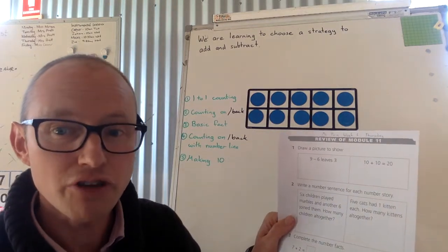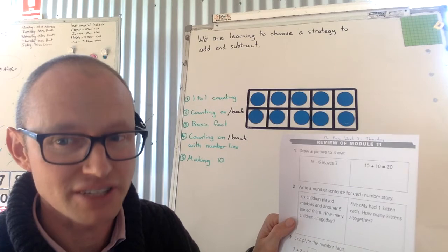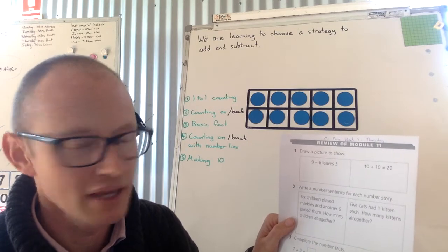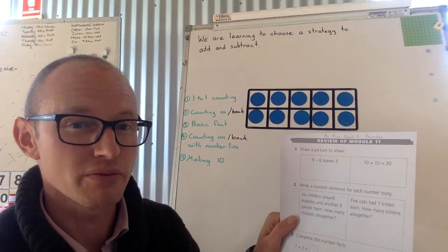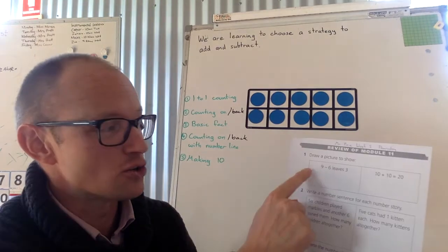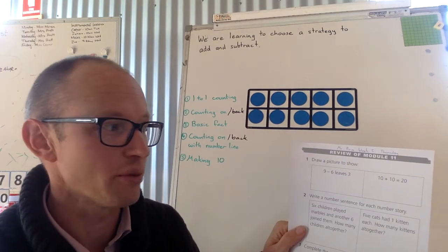So the first question, nine take away six leaves three. It says draw a picture to show it. So again, you could choose which strategy you want to use and draw a picture to try and show that strategy on the page.